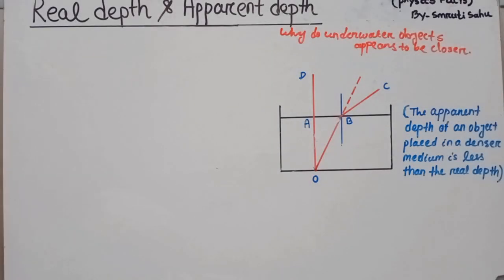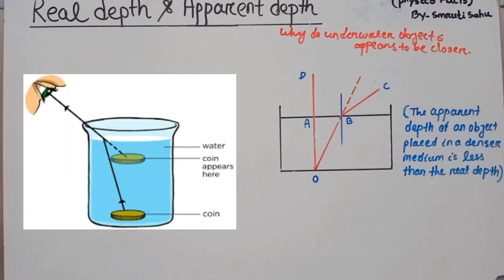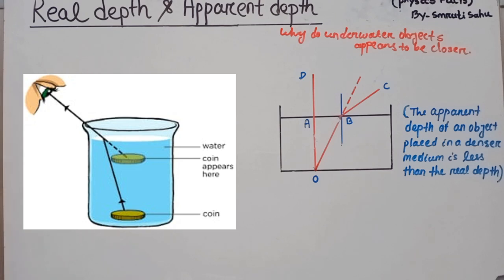Here we discuss about real depth and apparent depth. Why do underwater objects appear to be closer? Look at the picture. Here that coin is at the bottom of the water but appears to be nearer to us. The actual position of the coin is at the bottom — that is the real object — but it appears to be some nearer to us, and that apparent position is the virtual object. Now we go through this phenomenon in detail.